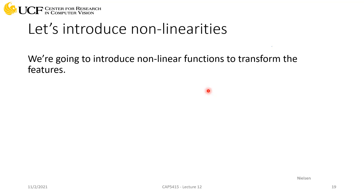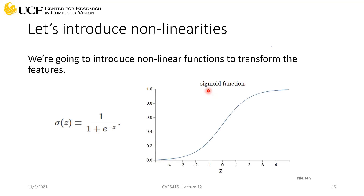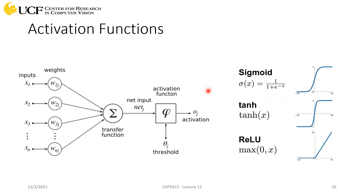The only important concept remaining is softmax — the rest is revision. We discussed introducing nonlinearities: without them, stacking layers is equivalent to just one layer, and we can compress it all. Activation functions introduce nonlinearity, allowing the network to learn very complex functions. We apply these activations after each convolutional or fully connected layer. Examples include sigmoid, tanh, and ReLU.